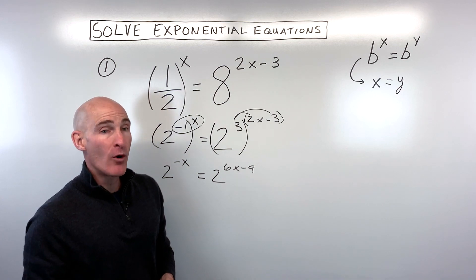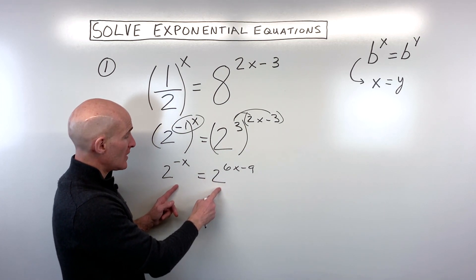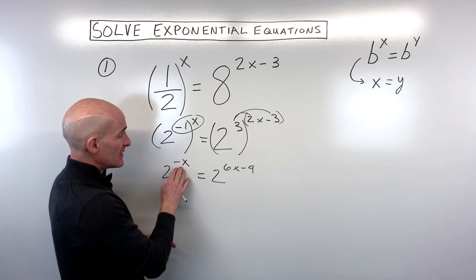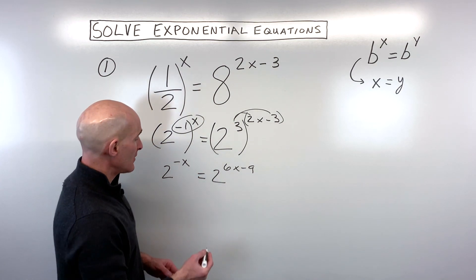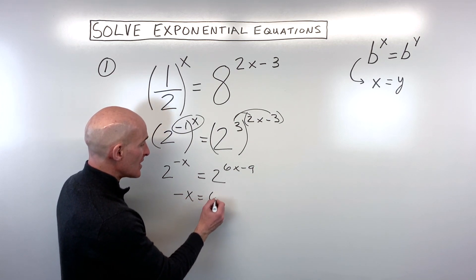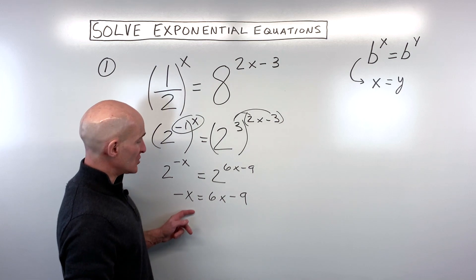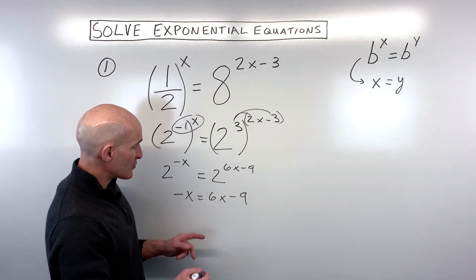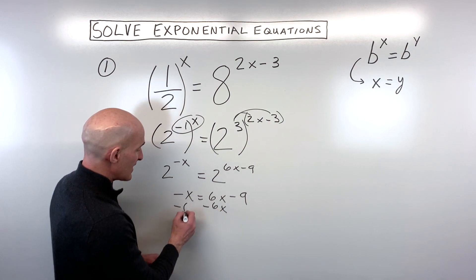Now we've got the bases to be the same — they're both base two. So in order for this to be an equation, the exponents also have to be equal to one another. This is called the one-to-one property of exponents. So all we're going to do now is solve this equation — get the variables on one side, numbers on the other. Let's subtract six x from both sides.